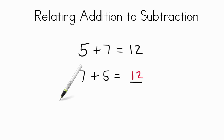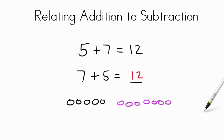Let's take a look and see if we can explain this. If we had five counters here one, two, three, four, five and we added in seven more one, two, three, four, five, six, seven if we put all of those together we get the number 12.